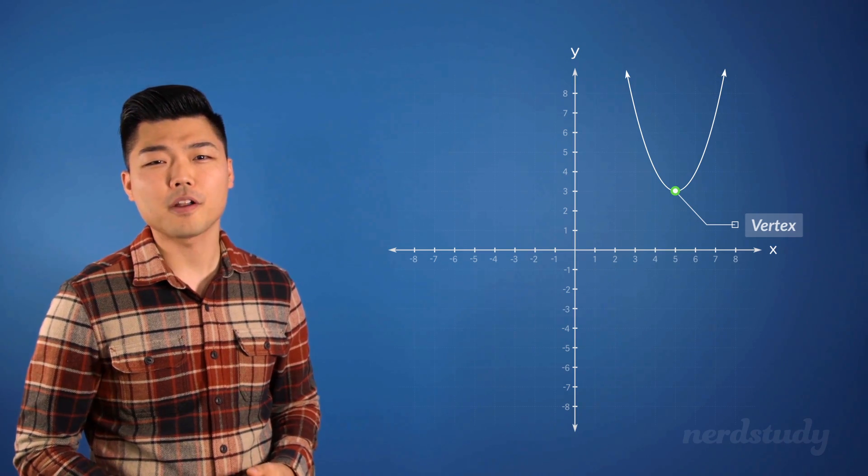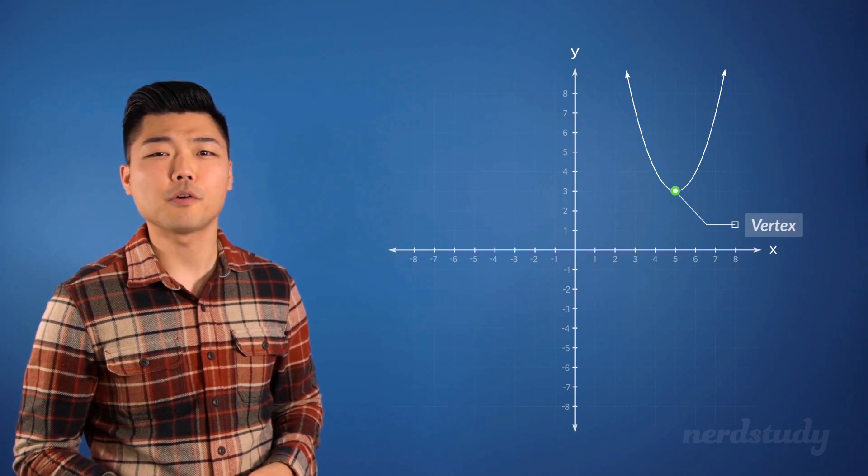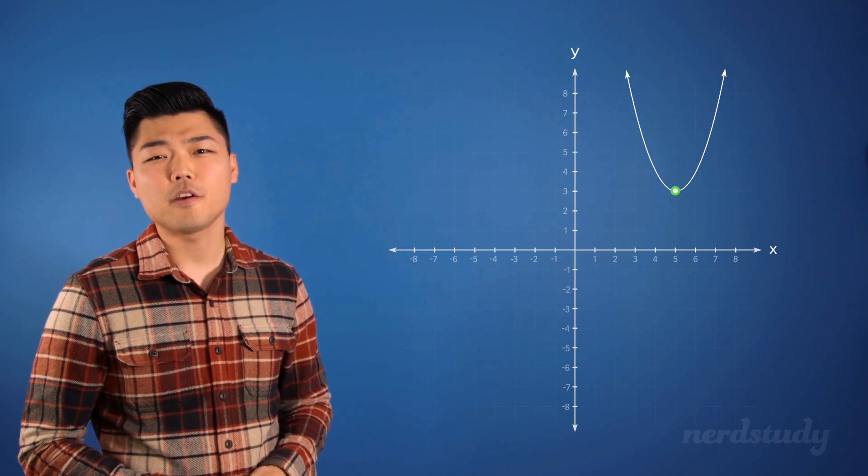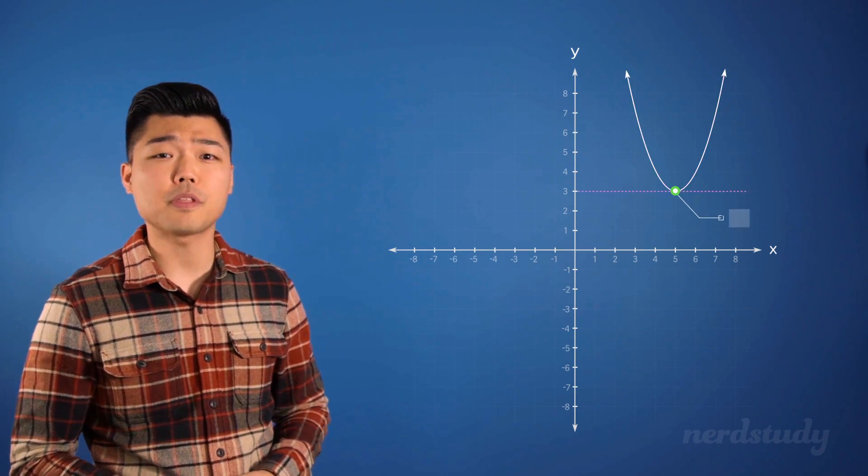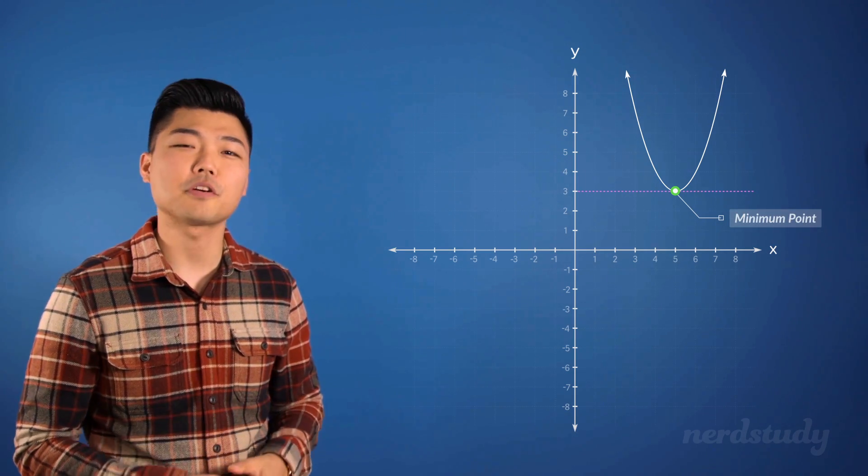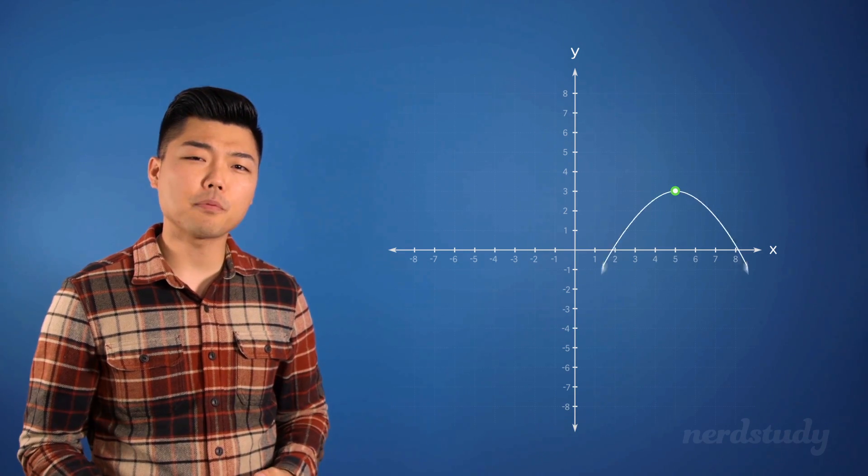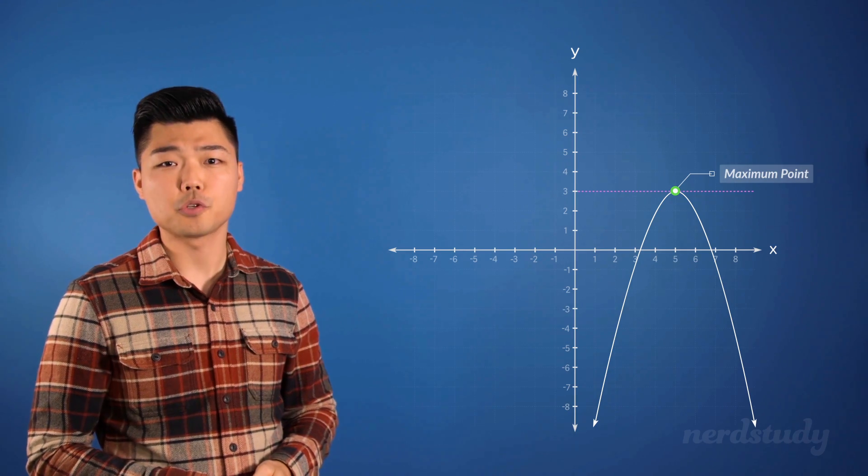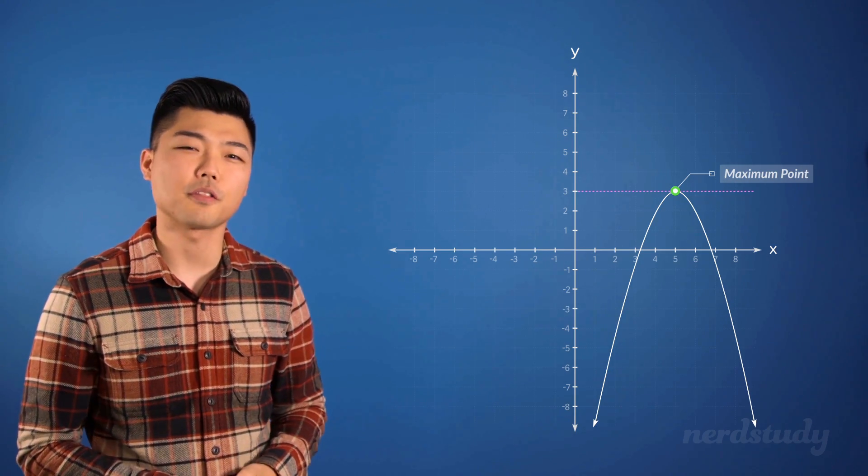The vertex can be thought of as the point in the parabola where the curve changes direction. If the parabola is opening up, then the vertex will be the minimum point, or the lowest point on the graph. If the parabola is opening down, the vertex will be the maximum point, which would be the highest point on the graph.